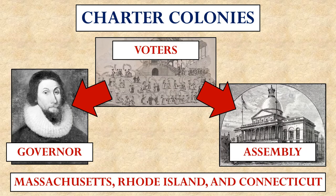The third kind of colonial government were charter colonies. Charter colonies came into being when a group got permission — a charter — from the king to come set up a colony in America, such as the Pilgrims coming to settle in Massachusetts. They would see themselves as the rulers of the colony, and this was later formalized with voters being the main power. The voters would select a governor, assembly, and courts to set up the government. In this system, the voters — not the king — ultimately held the power. Massachusetts, Rhode Island, and Connecticut are examples of charter colonies.